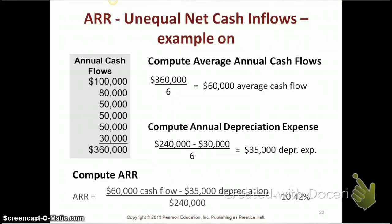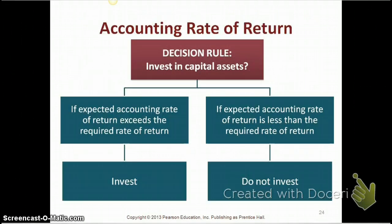Let's look at the decision rule for accounting rate of return. The decision rule is: should we invest in the capital asset or not? If your expected accounting rate of return exceeds the required rate of return, then you would invest. If your expected accounting rate of return is less than the required rate of return, you would not invest in the asset.